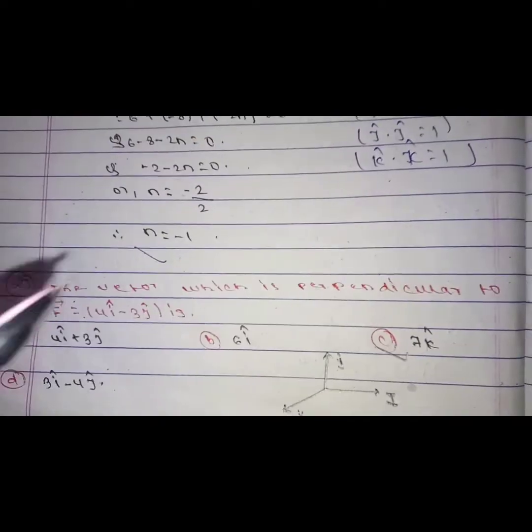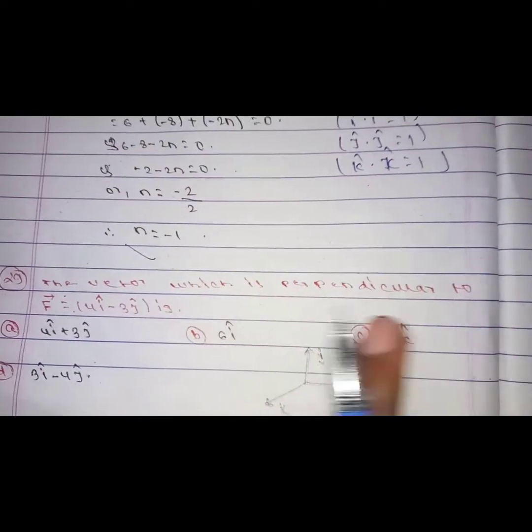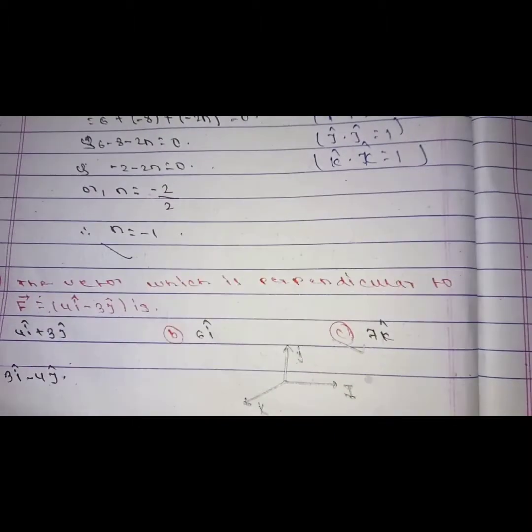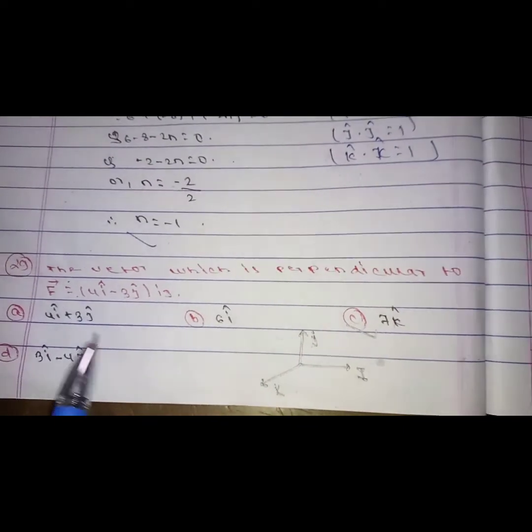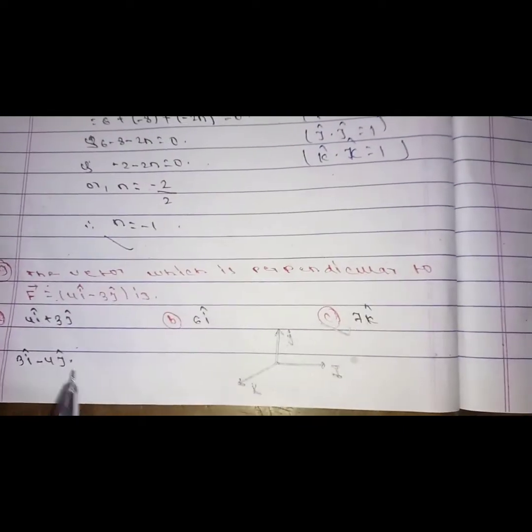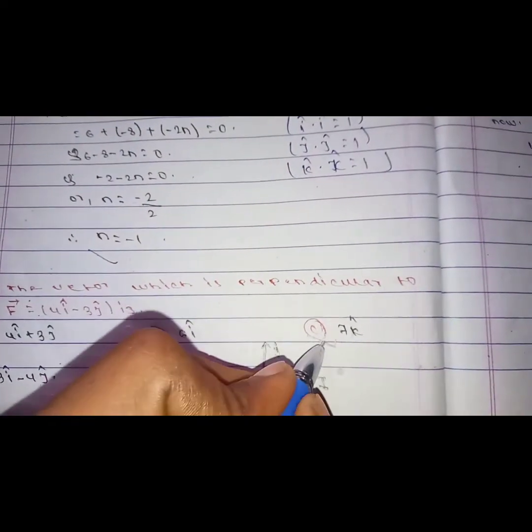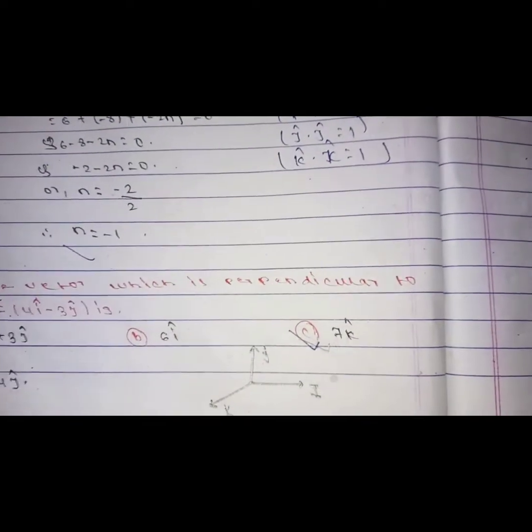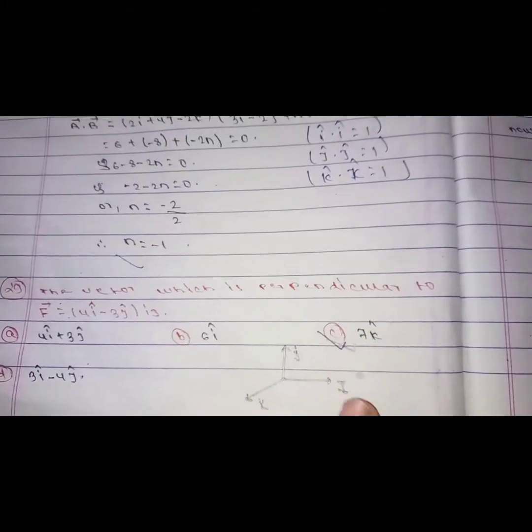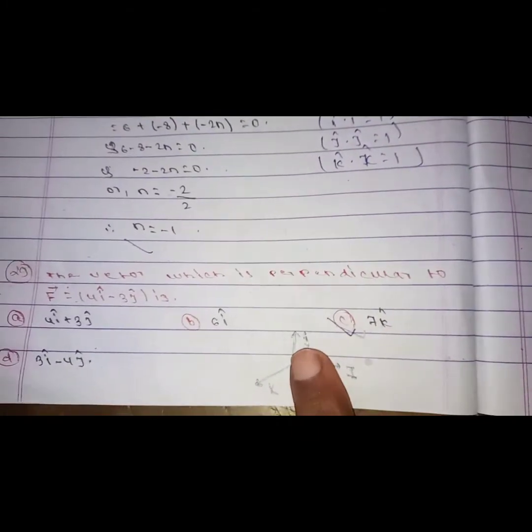Okay, last question. The vector which is perpendicular to the force, the other 4i minus 3j. The answer is, the answer is c.